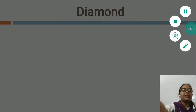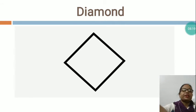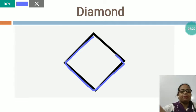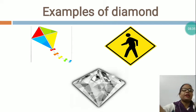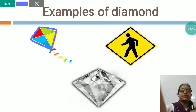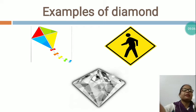Now the next is DIAMOND. I would like to show you this is the diamond shape. Now I would like to show you some examples of diamond. These all are the examples of diamond. Have you seen a kite? What is the shape of the kite? Diamond shape. You can see this is diamond shape. Have you seen a diamond? Which shape? Diamond shape. And this is a traffic sign also — which shape? Diamond shape. These all are the examples of diamond.